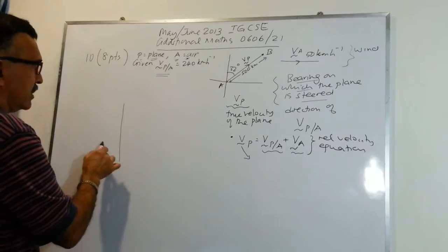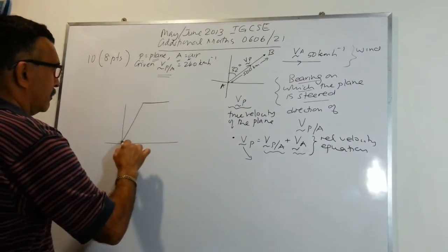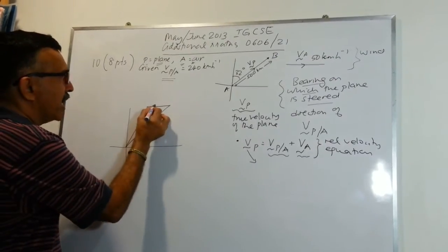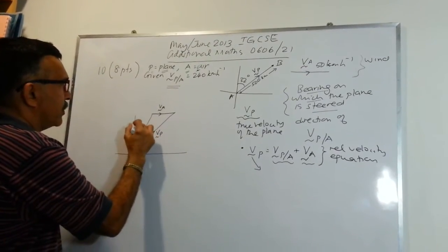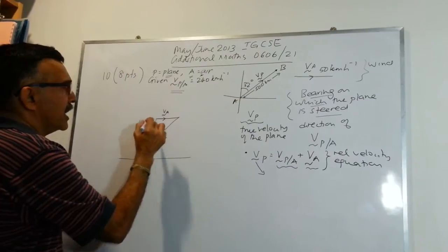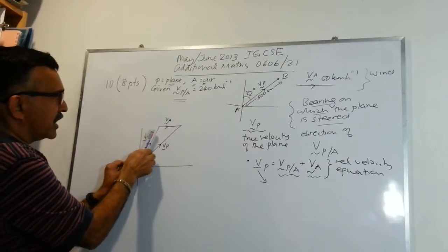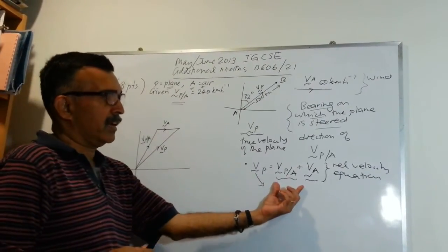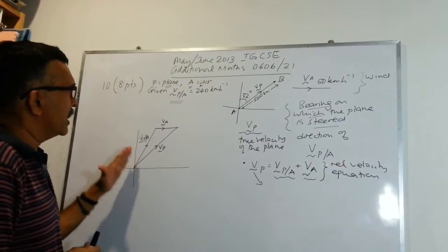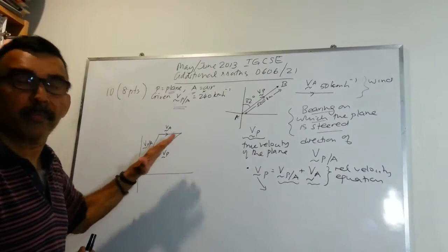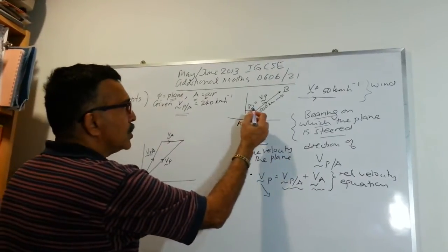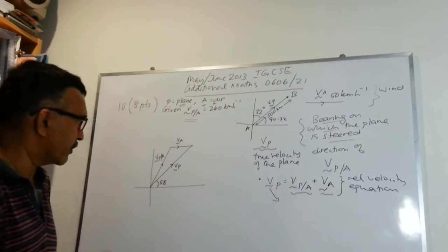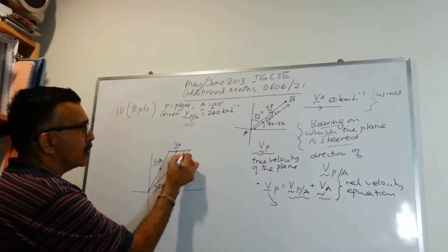So we have V_P, V_A, and V_P relative to A in our triangle. The direction V_P/A is the direction in which we steer the plane so that, with the assistance of the wind, we end up at point B. Now let's mark in the angles: since the bearing is 32°, this gives us 90 minus 32 equals 58 degrees. Using alternate angles, we also get 58 degrees on the other side. The magnitudes are 50 for the wind and 240 for the plane's speed.